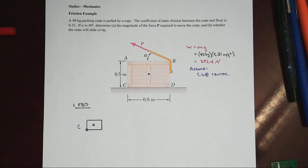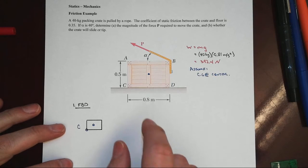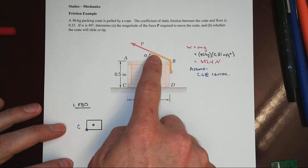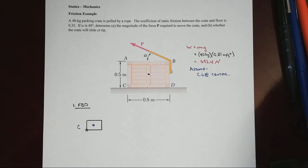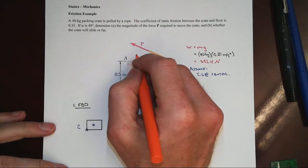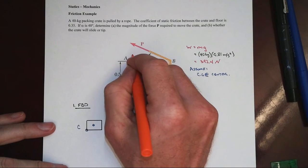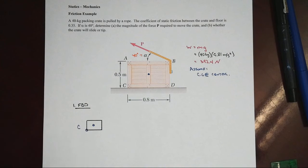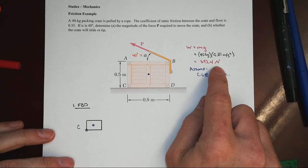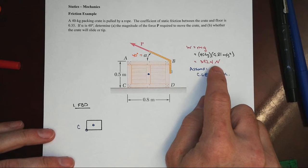In this example of a friction problem, we have a crate, a 40 kilogram mass, that we're looking at trying to move. The crate has a cable or rope attached to it, and the cable comes around at point B at an inclination of 40 degrees. The equivalent weight of this crate is 392.4 newtons.